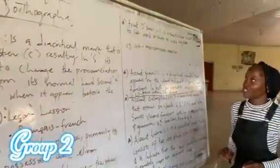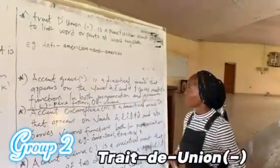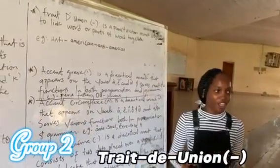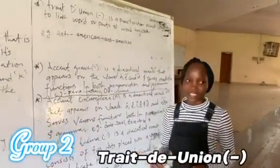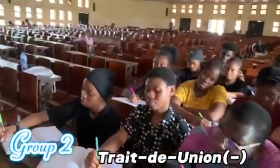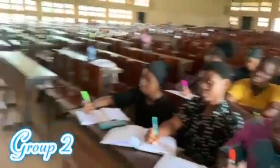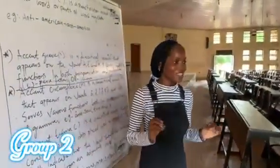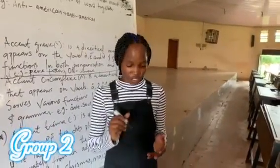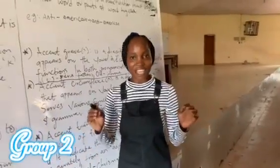Last but not least, we have the trait d'union. The trait d'union is a contraction mark used to link words together in the French language. For example, we have anti-américain, which means anti-American in English. In conclusion, the orthographic signs are key symbols used to differentiate between French, German, and Spanish, because these languages share the same alphabet.